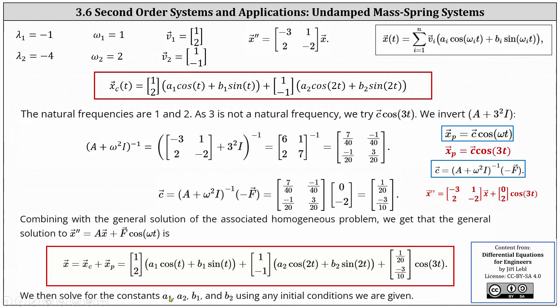At this point, if we had initial conditions, we would solve for A one, A two, B one, and B two. I hope you found this helpful.